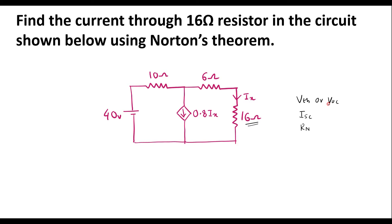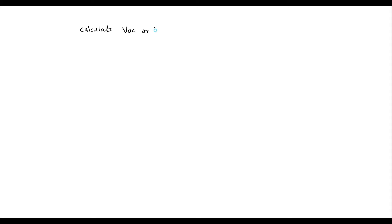VTH or VOC is the Thevenin's voltage — the open circuit voltage — calculated across the branch in which we are finding the current. Since we are finding current IX through the 16 ohm resistor, to calculate VOC we must remove this 16 ohm resistor from the circuit. Removing it makes terminals A and B open, and we need to find the voltage between A and B, which is VTH or VOC.